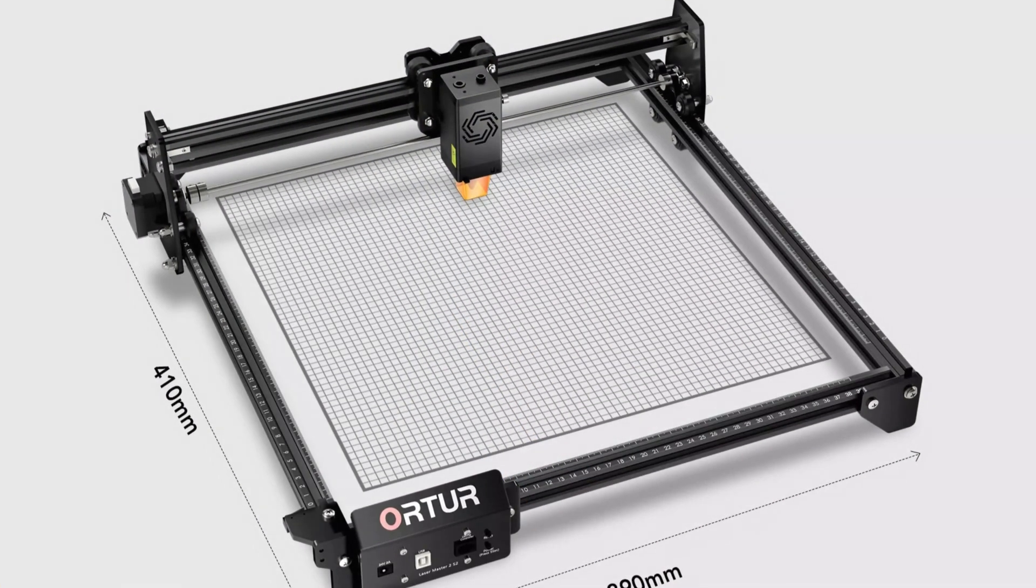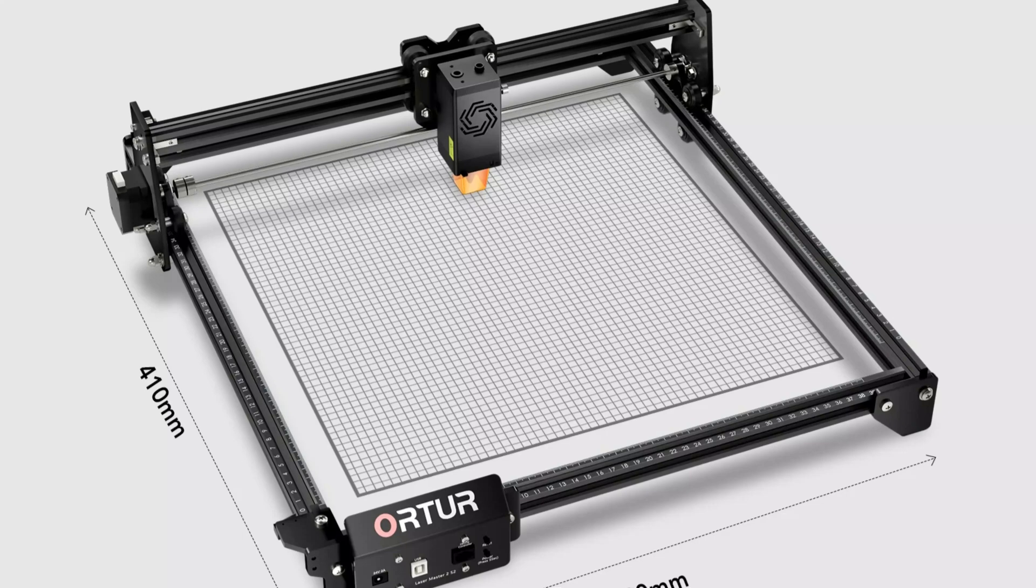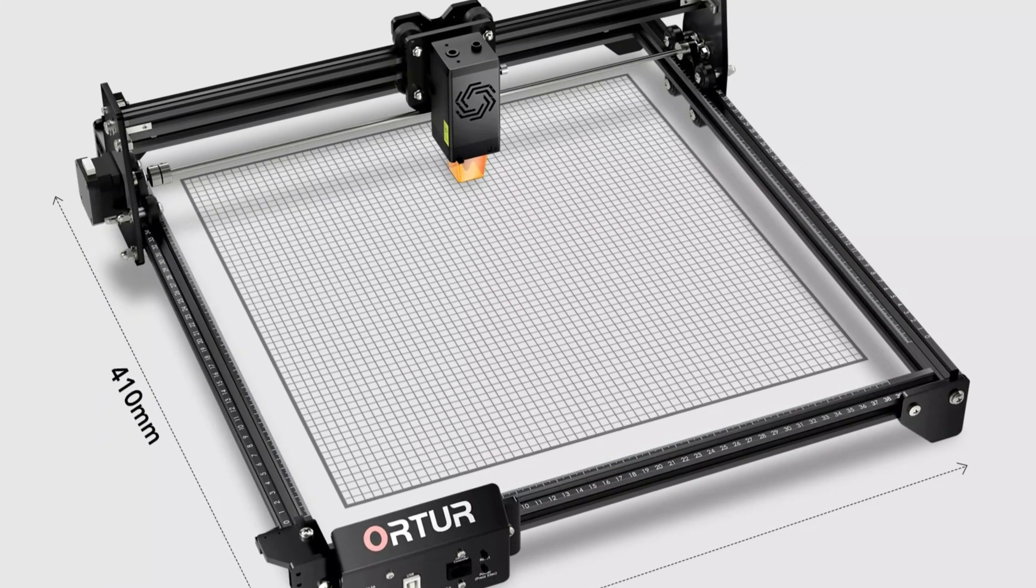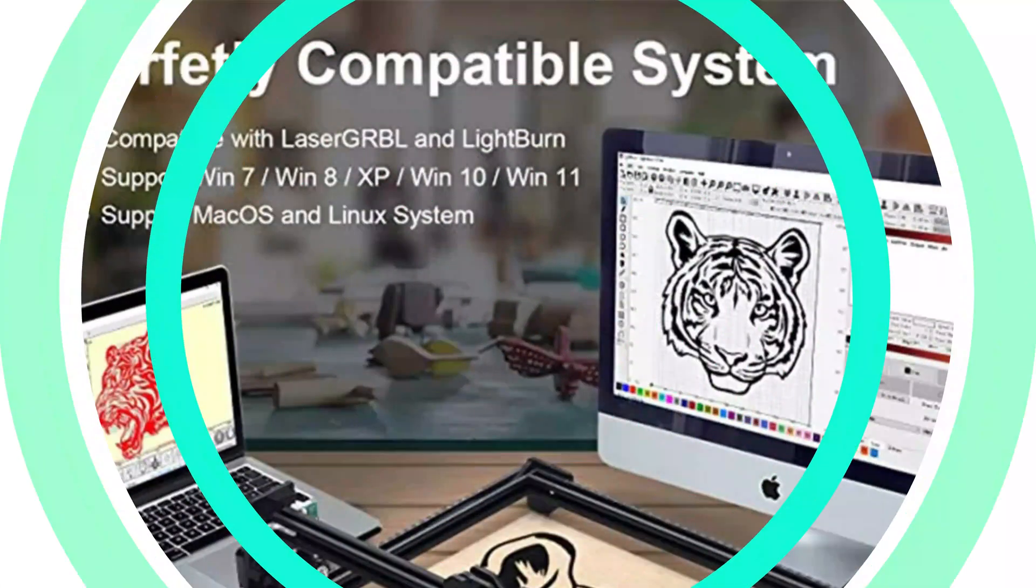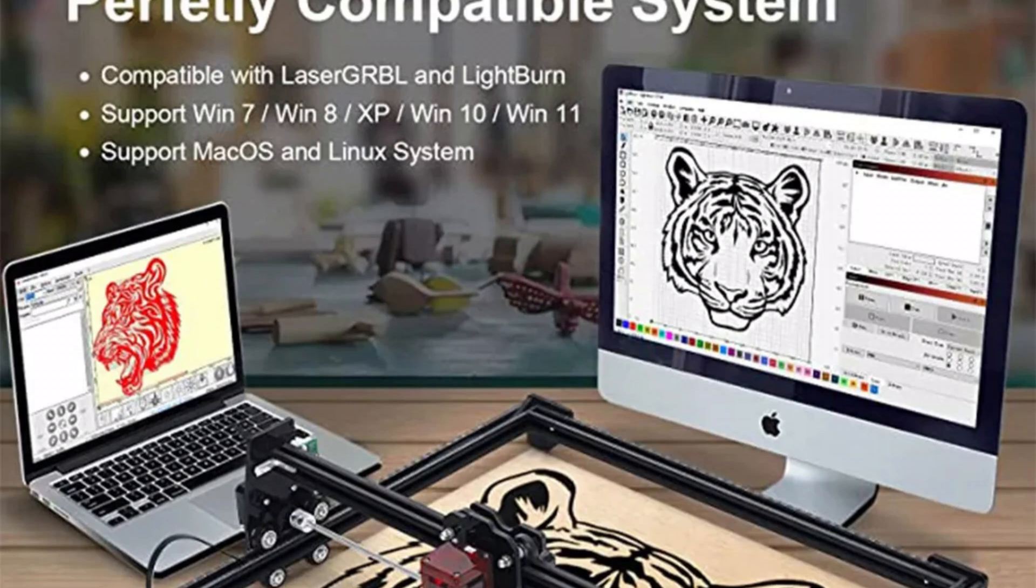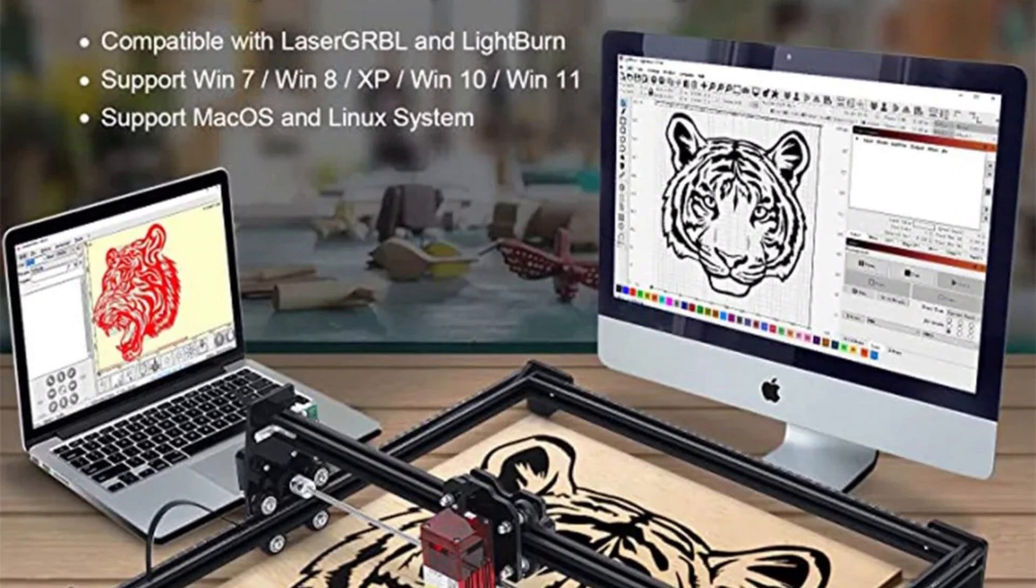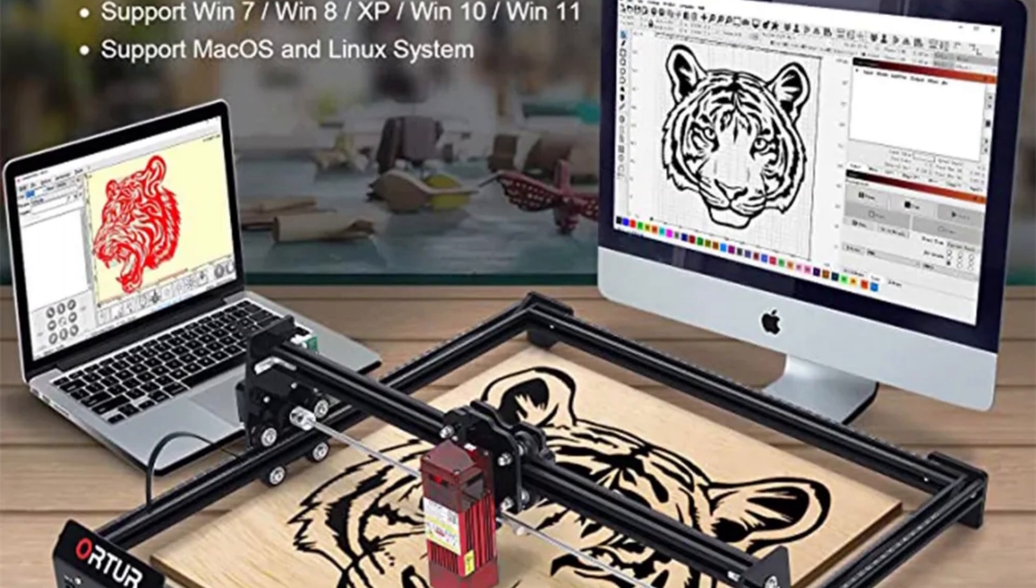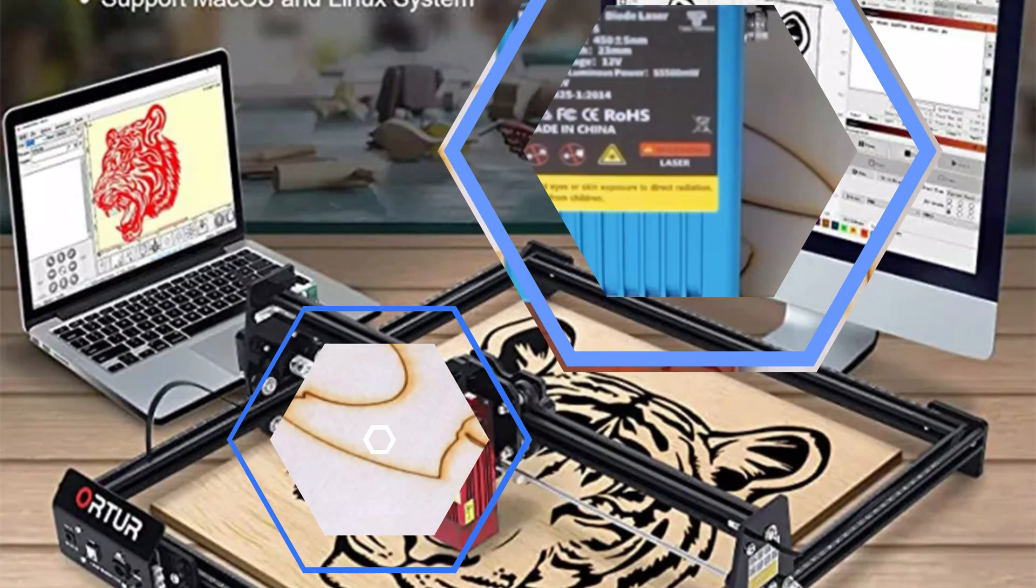The engraver's adjustable speed ranges from 0 to 5,000 mm per minute, allowing users to tailor their workflow to their specific needs. The engraver is compatible with popular control software like LaserGRBL and Lightburn, making it easy for both professionals and novices to navigate. The engraver's CE certification emphasizes safety and quality assurance.